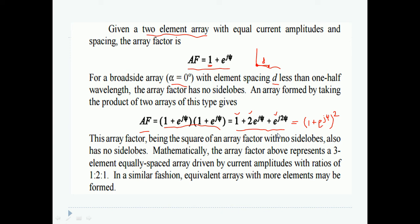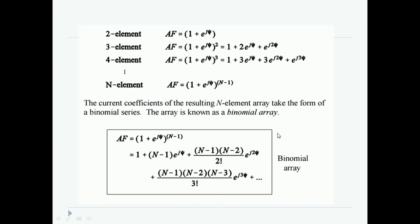Similar fashion, as we go for further products, three products of the array factor of two-element array, we have expression 1 plus 3e to the power j psi plus 3e to the power 2j psi plus e to the power j3 psi. This expression gives us elements which are in the number 4 for an array which is having low side lobe levels.